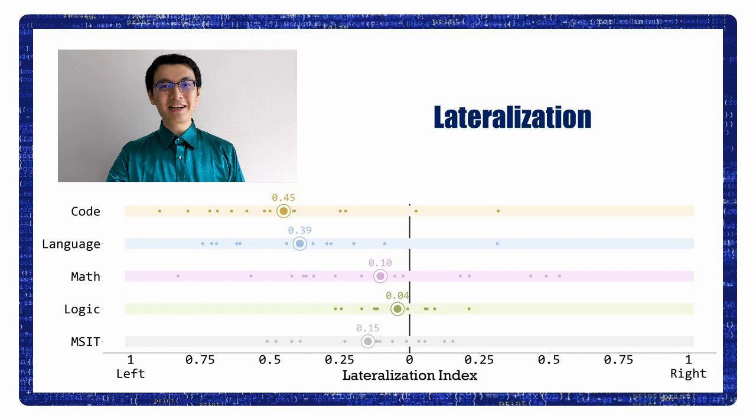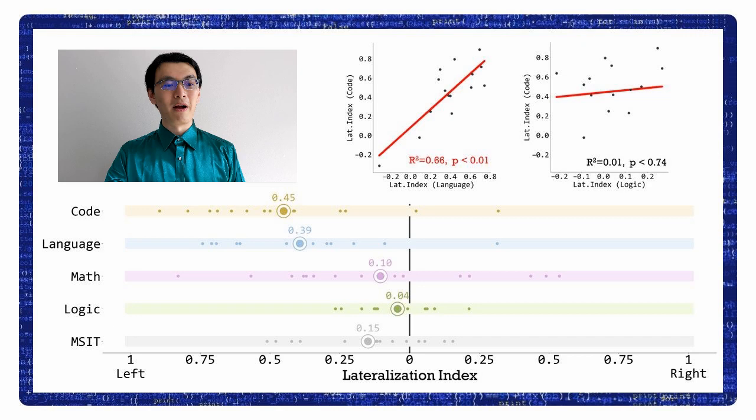The neural basis of code comprehension and language comprehension didn't overlap, but there's an interesting observation. Both of them are highly left lateralized. Look at this graph. Each dot stands for a participant, and the big dots stand for the mean values. Math, logic, and executive control are roughly bilateral, but code and language are left lateralized. What's more, their lateralization indexes were highly correlated. This phenomenon wasn't observed for math, logic, and executive control.